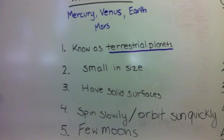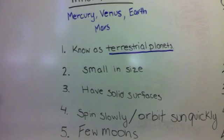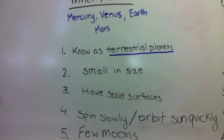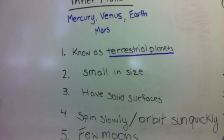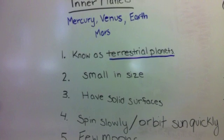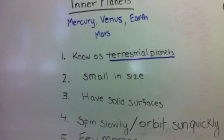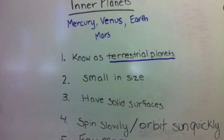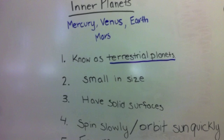Lastly, the inner planets have very few moons. Mercury and Venus don't have any. Earth has one, and Mars has two.